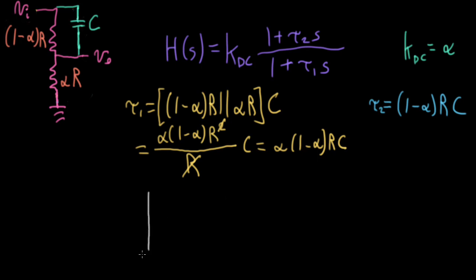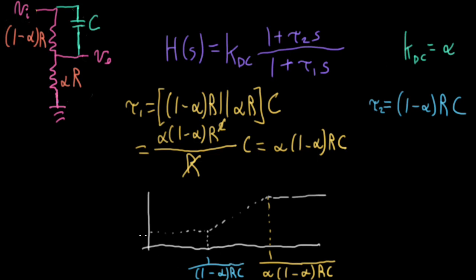So let's sketch the Bode plot of a one-pole high-pass shelving filter. So here's the lower shelf, here's the upper shelf, and then here's the transition region. And the lower break point is going to be at 1 over tau 2, which is the time constant associated with a zero. So that's going to be 1 over 1 minus alpha rc. And the upper break point is going to be at 1 over the time constant associated with a pole, which is alpha 1 minus alpha rc. And it's going to start at alpha over here, which is what you get from the volume control, and it's going to go up to 1.